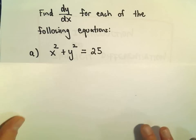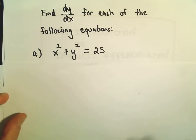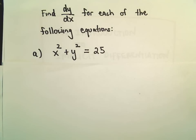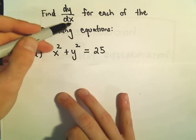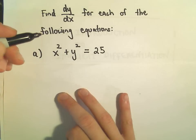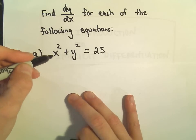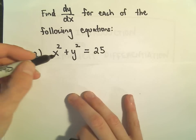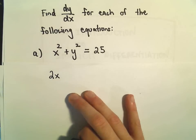The main thing to remember when we're doing implicit differentiation — let's look at x squared plus y squared equals 25. We're taking the derivative with respect to x of both sides. Whenever you take the derivative of the variable x, we just do it like normal. So the derivative of x squared is just 2x.